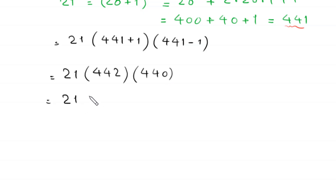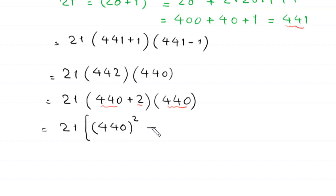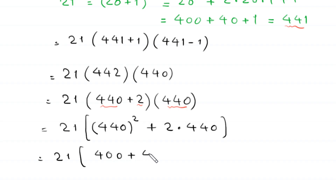Next, 21 times 442 can be written as (440 plus 2) times 440. We multiply 440 by 440 and by 2. So 440 times 440 becomes 440 squared, plus 2 times 440. Next, 440 squared can be written as (400 plus 40) whole squared, and 2 times 440 becomes 880.